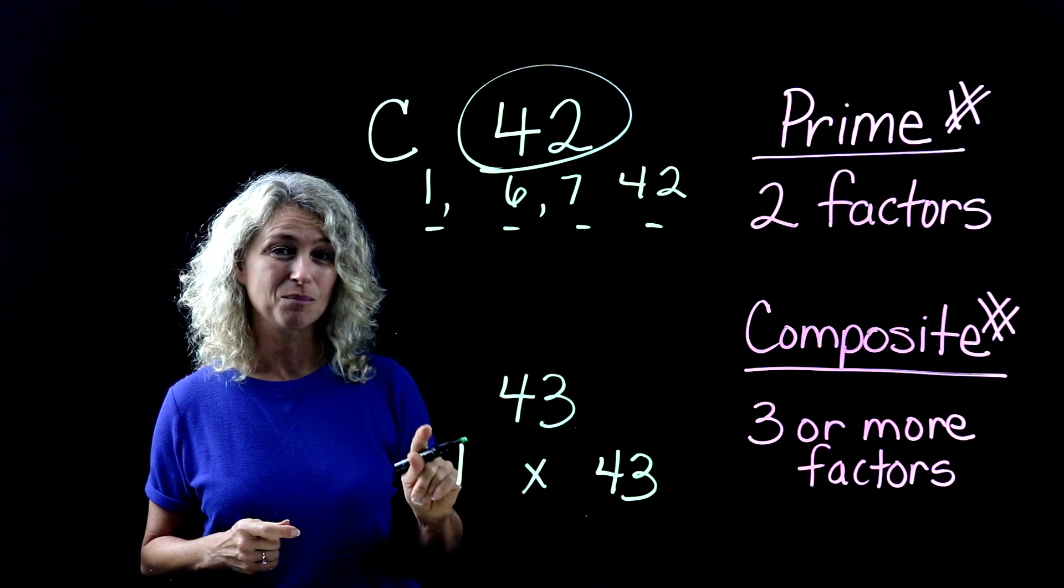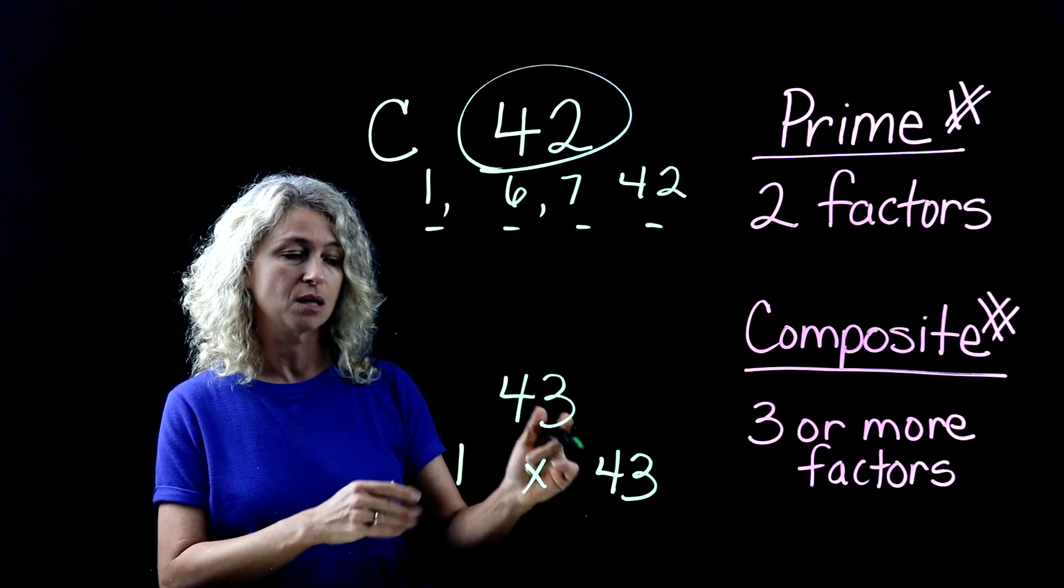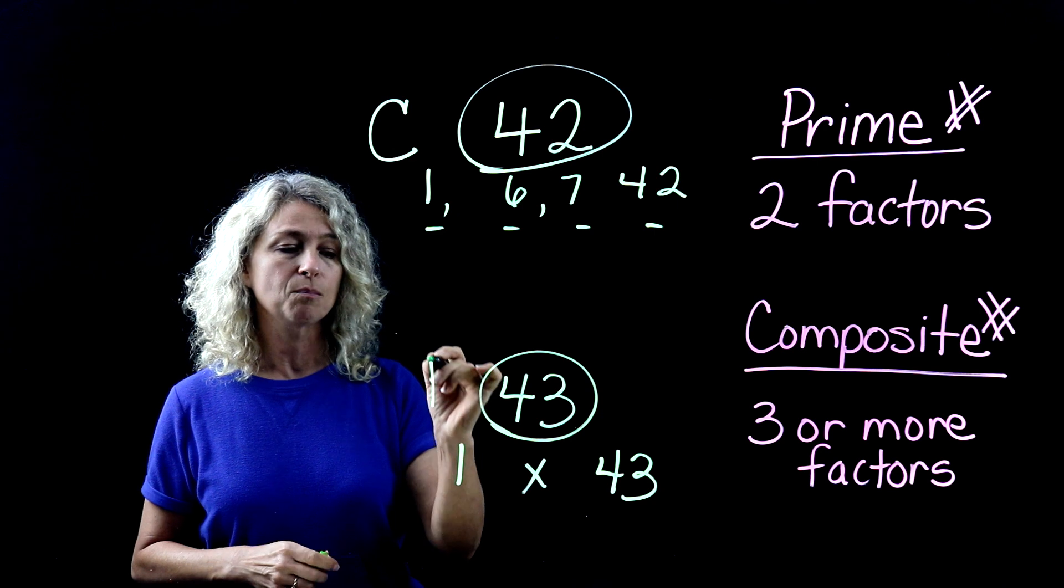And so you know that one times 43 is 43, but you can't think of anything else that you can multiply to get to 43. And you would be right, because that's it. Those are your only two numbers. And this one would be prime.